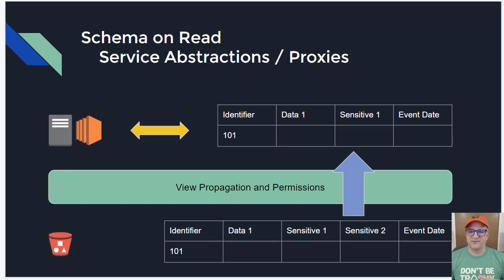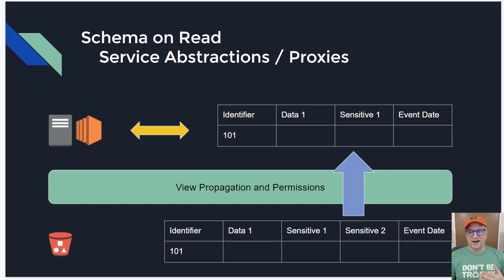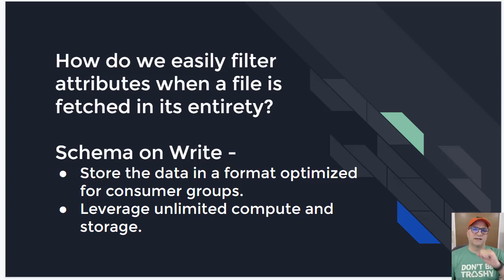In this example, we have the same data set as before, and this user is allowed to see sensitive data field one but not sensitive field two. As this data is retrieved from the bucket through some kind of proxy or view propagation tier — and this could be a SaaS product too, like a cloud-based database built on top of blob storage — those are really view propagation tiers, an abstraction on top of blob store.